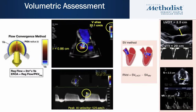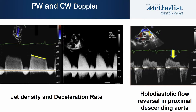Volumetric assessment similar to MR can add additional information for AI severity — the PISA method can be used in AI if proximal flow convergence in the aorta is visible, and you can subtract mitral valve stroke volume from LVOT stroke volume to get regurgitant volume. Pulsed wave and continuous wave Doppler are also helpful — looking at jet density compared to forward aortic valve flow, deceleration rate, and presence of holodiastolic flow reversal in the proximal descending aorta. A dense jet, steep deceleration, and holodiastolic flow reversal all suggest significant aortic regurgitation.